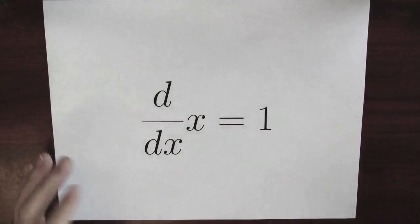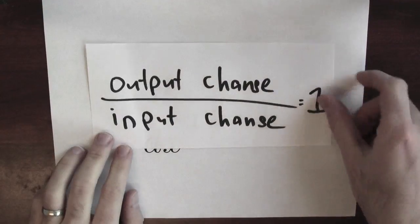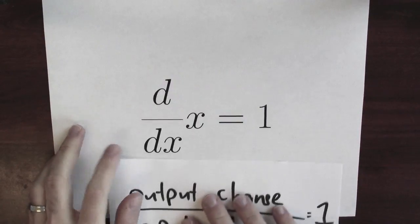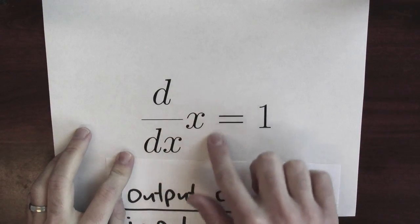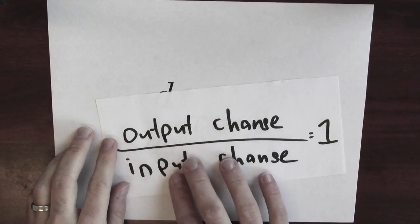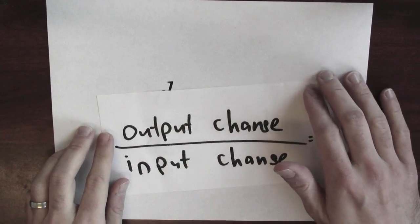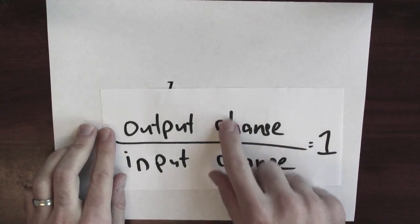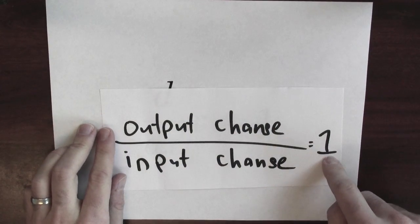This should make sense. Because what's the derivative measuring? The derivative is measuring output change compared to input change. And in this case, the function is just the function that sends x to x. The input and the output are exactly the same. So the input and the output change is exactly the same. Their ratio is just 1.